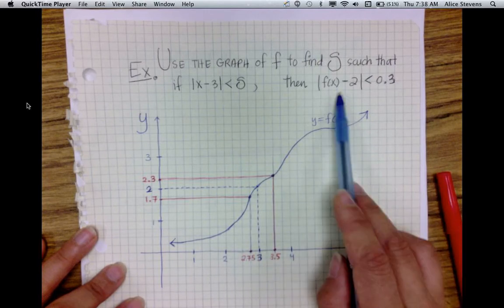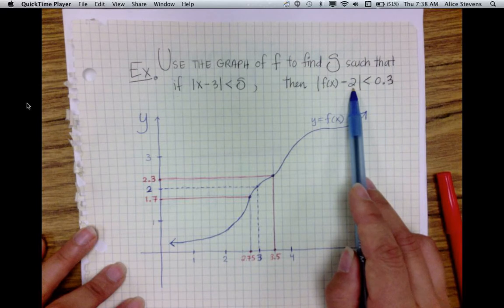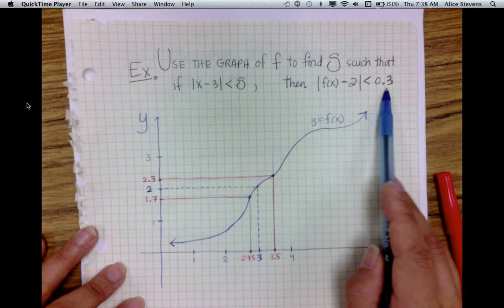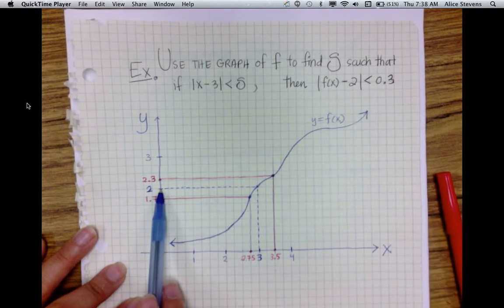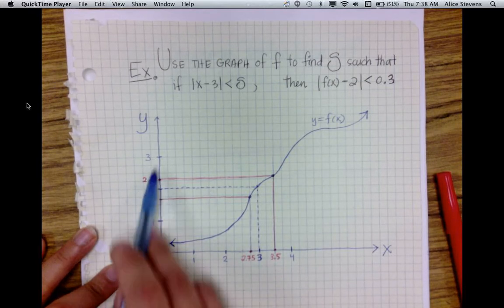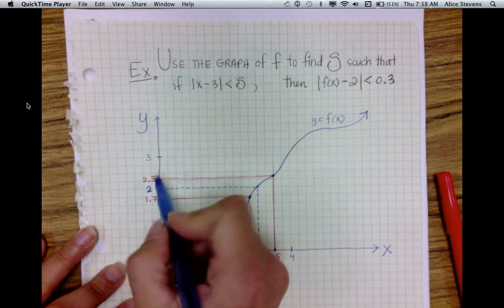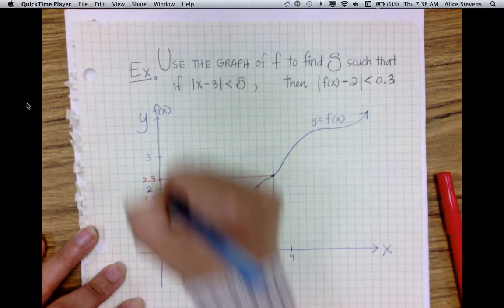Now let's look at this statement: the distance between f of x and 2 — so the distance between f of x and 2 is less than 0.3. f of x is over here on this axis, and here I have 2. So the f of x values correspond to the values along this axis.